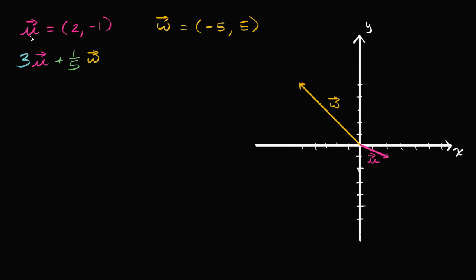We have vector u, defined by its x and y components. It's a two-dimensional vector. The x component is two and the y component is negative one. So if we put its initial point at the origin, the terminal point, or its head, will be at the point two comma negative one.